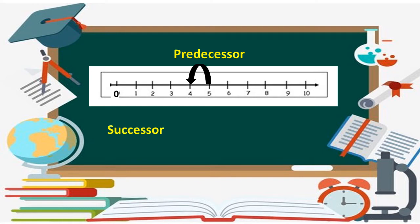Now let's see what is the successor. The successor of zero is one. We can say that each whole number has a successor. But zero does not have a predecessor, as zero is not a countable number. The successor of zero is one.